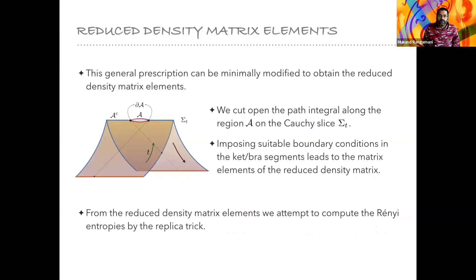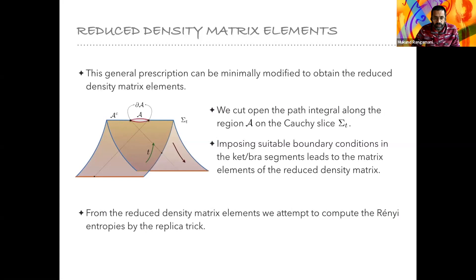If you want to talk about reduced density matrix elements, you can imagine cutting open this path integral, exposing some region A, and using boundary conditions to pick out matrix elements of the reduced density matrix. If you then want to compute spectral moments of this reduced density matrix, you just glue together many copies of this functional integral with suitable gluing conditions to compute any Rényi entropy, for example, by the replica trick. This is standard in quantum field theory.